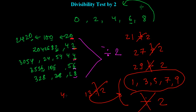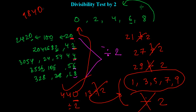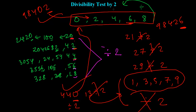But if I say 440, the ones place is 0, so 440 is divisible by 2. Any number like 98402 — the last digit is 2, so yes, it is divisible by 2. If I say 98426, the last digit is 6, which is an even number. So all even numbers are actually divisible by 2 — simply put, all even numbers are divisible by 2 and all odd numbers are not.